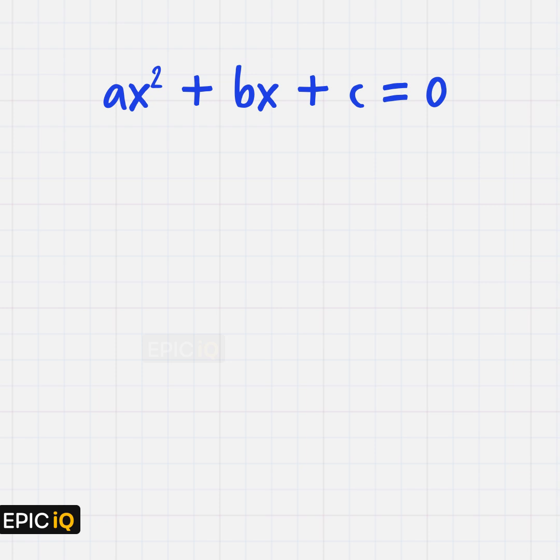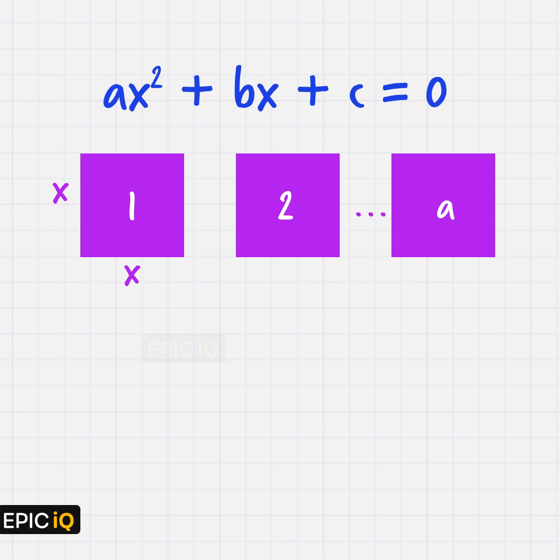Now, let us visualize this. We have the unknown x, so x² will be a square with side x. And we have a number of these squares.